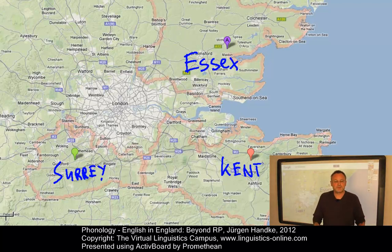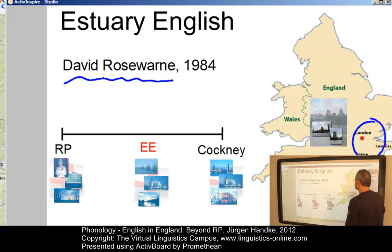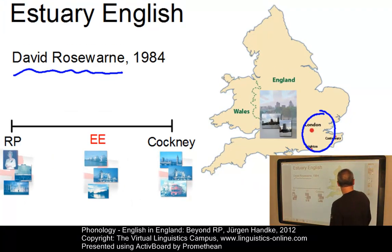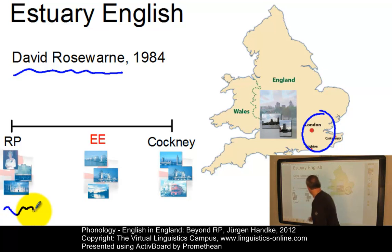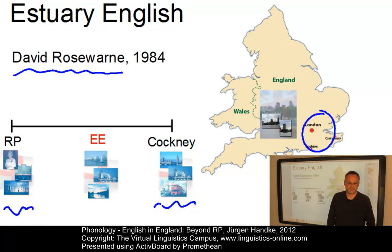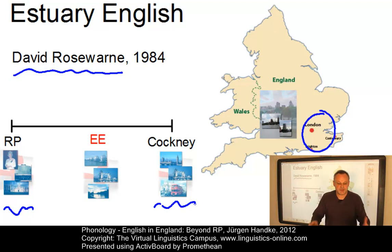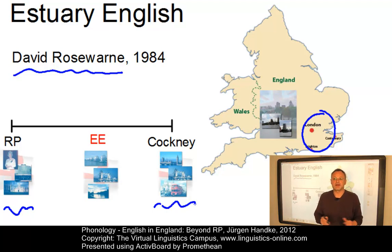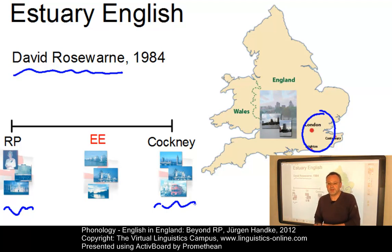To describe the phonology of Estuary English, we have to look at the two extremes and their phonological features: Received Pronunciation, whose sound system we defined as a reference model for English in England, and Cockney, the broadest form of the local London accent. We will then see where Estuary English is a mixture of these two varieties, where it incorporates features of Cockney and where it leaves the RP sound system intact.